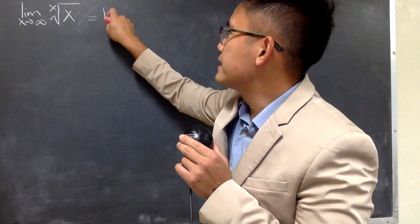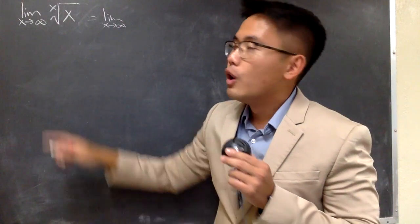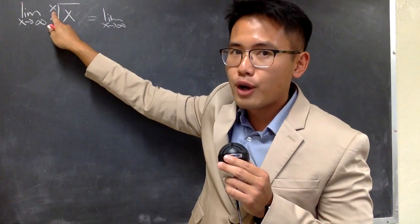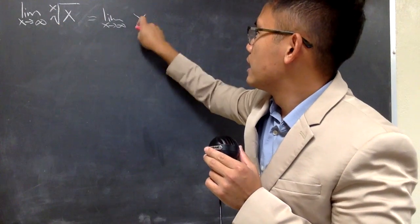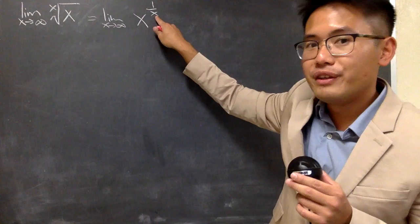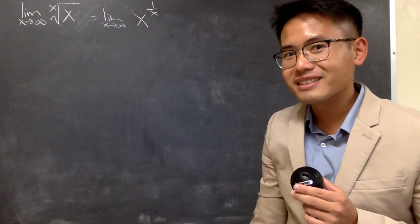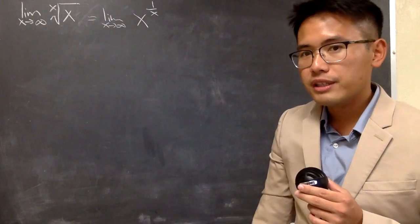So, right here, we can actually write this as the limit as x approaching infinity. And remember, whenever we have the index of the radical, this becomes 1 over x power. This number is the denominator of the exponent, but it's a rational number right here, a rational exponent. So, we can just pretty much do this.